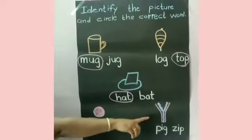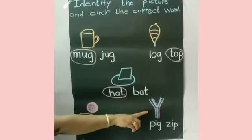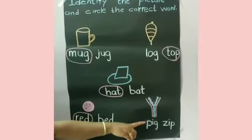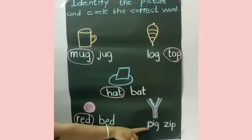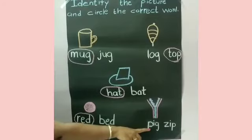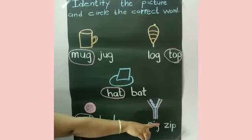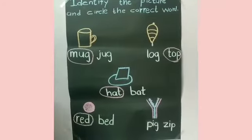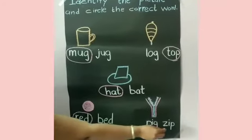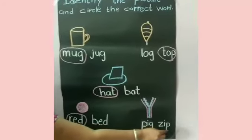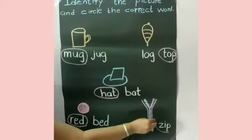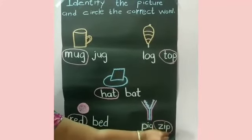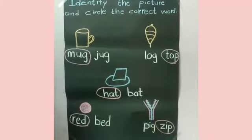Now, which picture is this? Yes, it is a zip. P-I-G pig, P-E-G pig. Z-I-P zip, Z-E-P zip. So we will circle on Z-I-P zip.